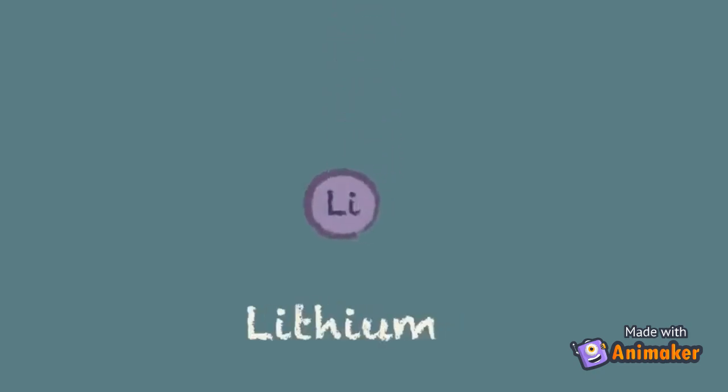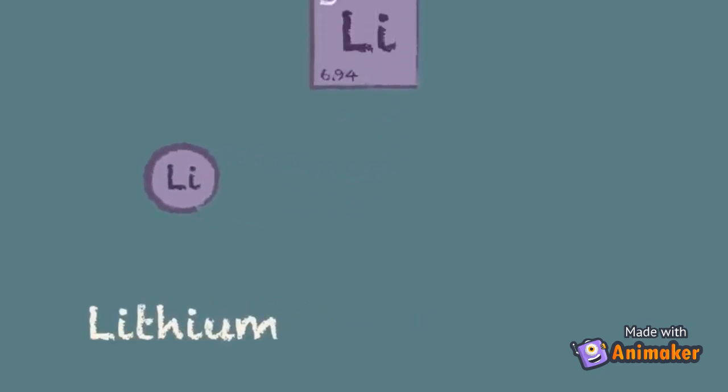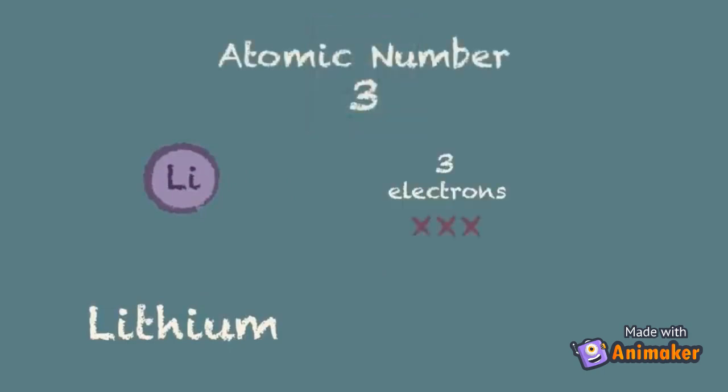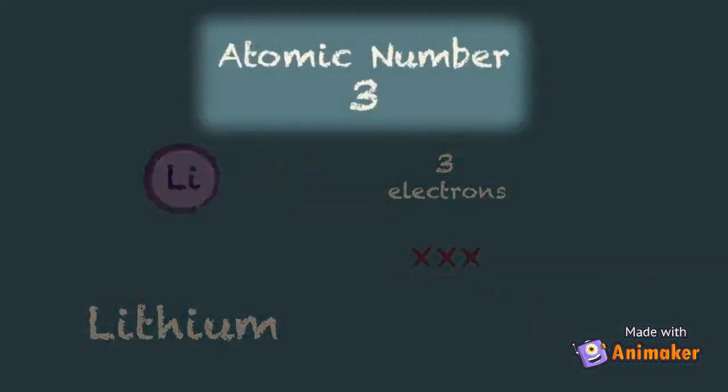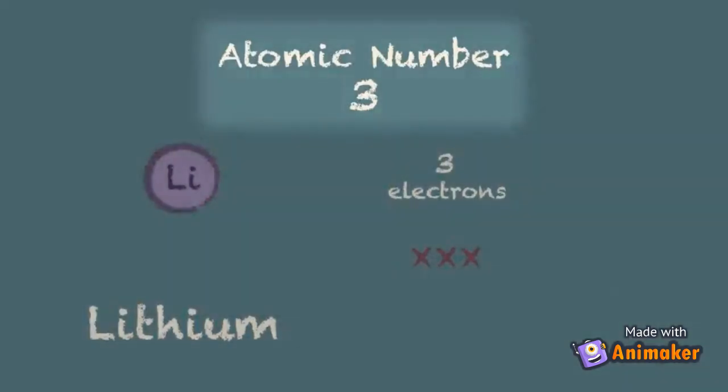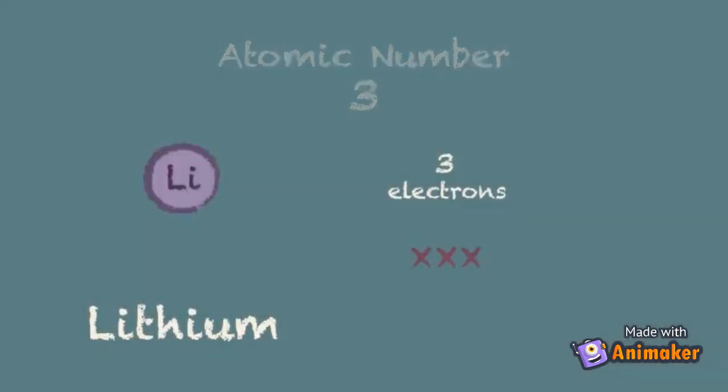We'll take a lithium atom as an example. With an atomic number of three, it must have three electrons to balance the positive charge of the three protons in the nucleus. It's worth remembering that the atomic number tells you the total number of electrons in a neutral atom. So we put the first electron into the first shell, and the second.